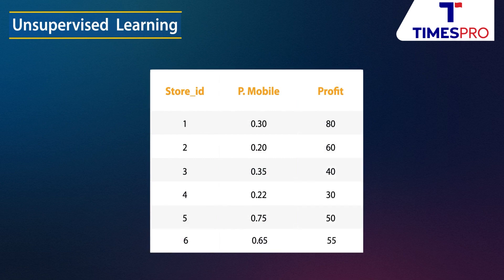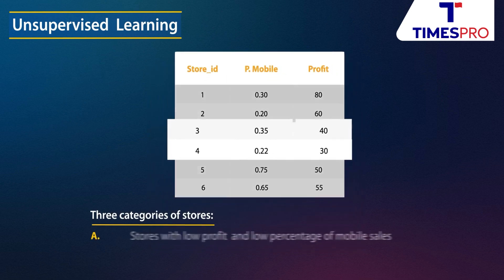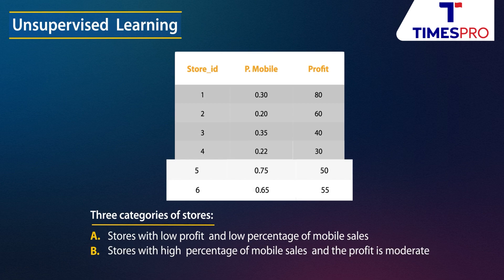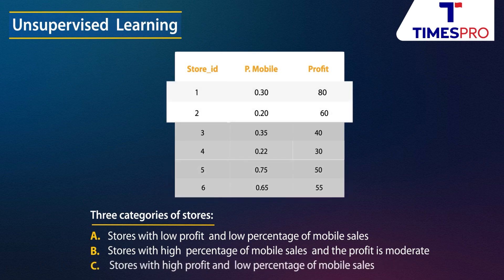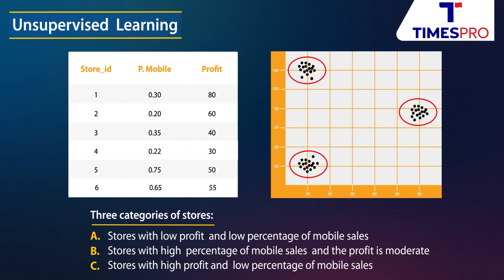Let's look at a sample data set of various mobile stores across the country, capturing the percentage of mobile sales and profit. Closely observing the data, there are three categories of stores: first, stores with low profit and low percentage of mobile sales; second, stores with high percentage of mobile sales and moderate profit; and third, stores with high profit and low percentage of mobile sales. These clusters give an idea of what kinds of mobiles are sold at each store and the spending limits of every customer. Each data point within a cluster exhibits more similarity in customer behavior than those in different clusters.